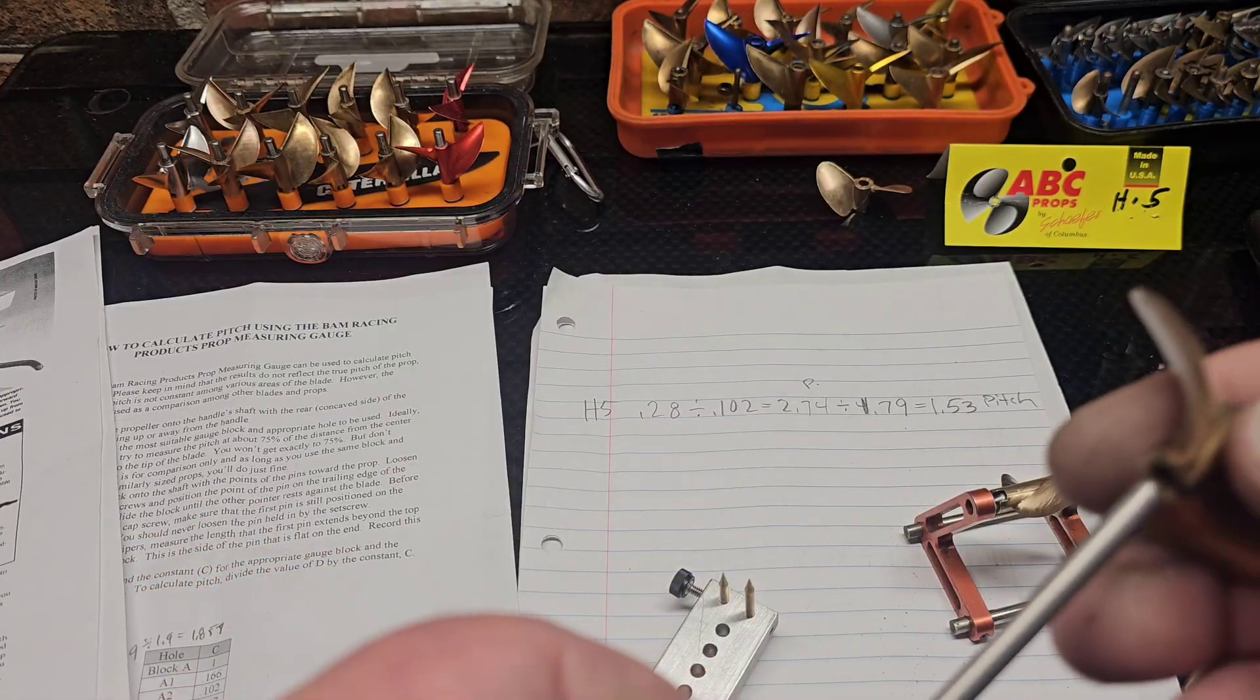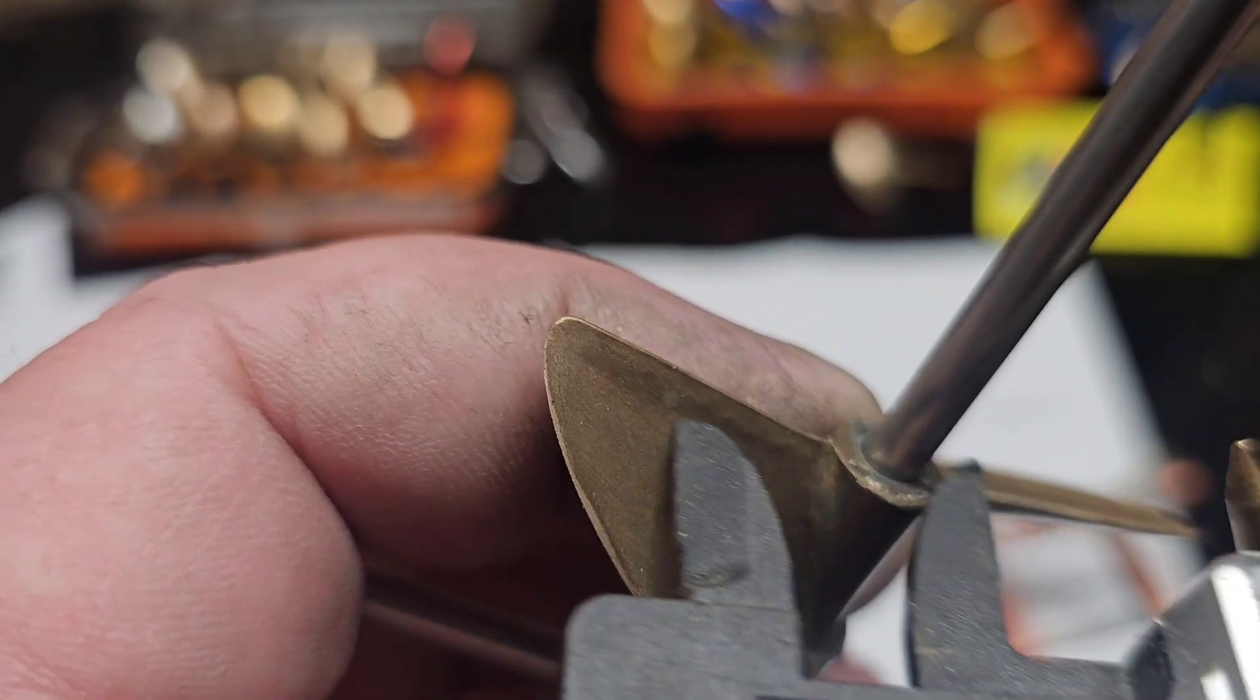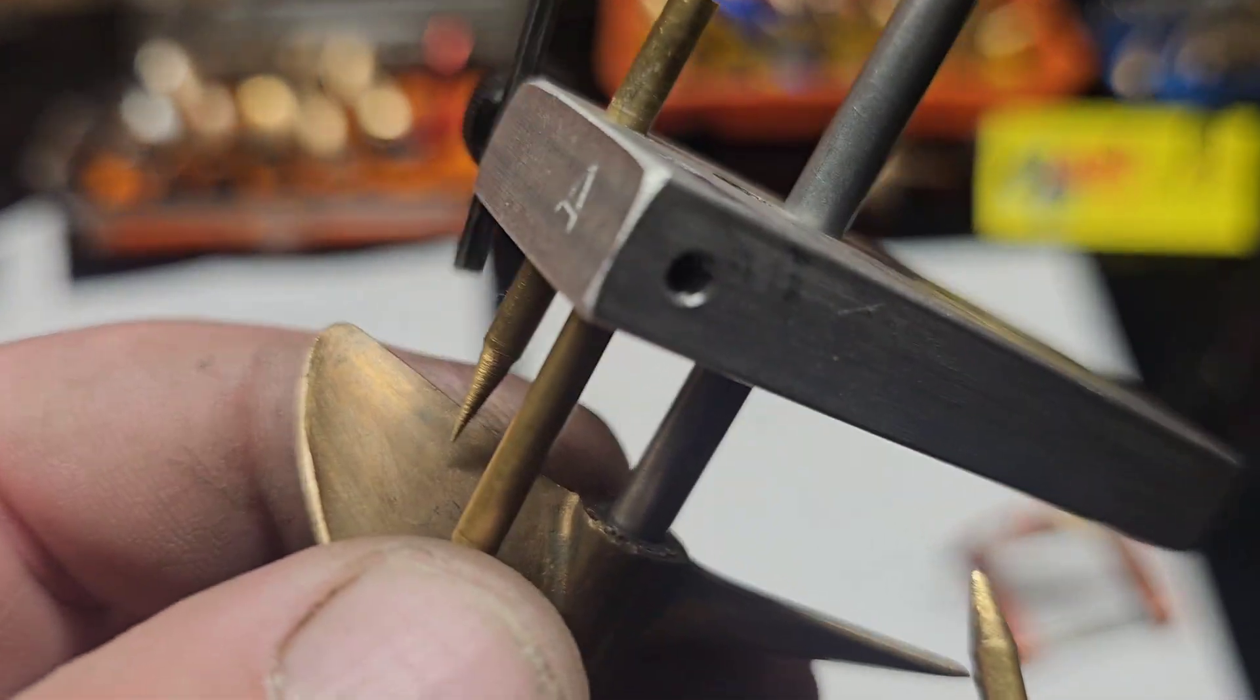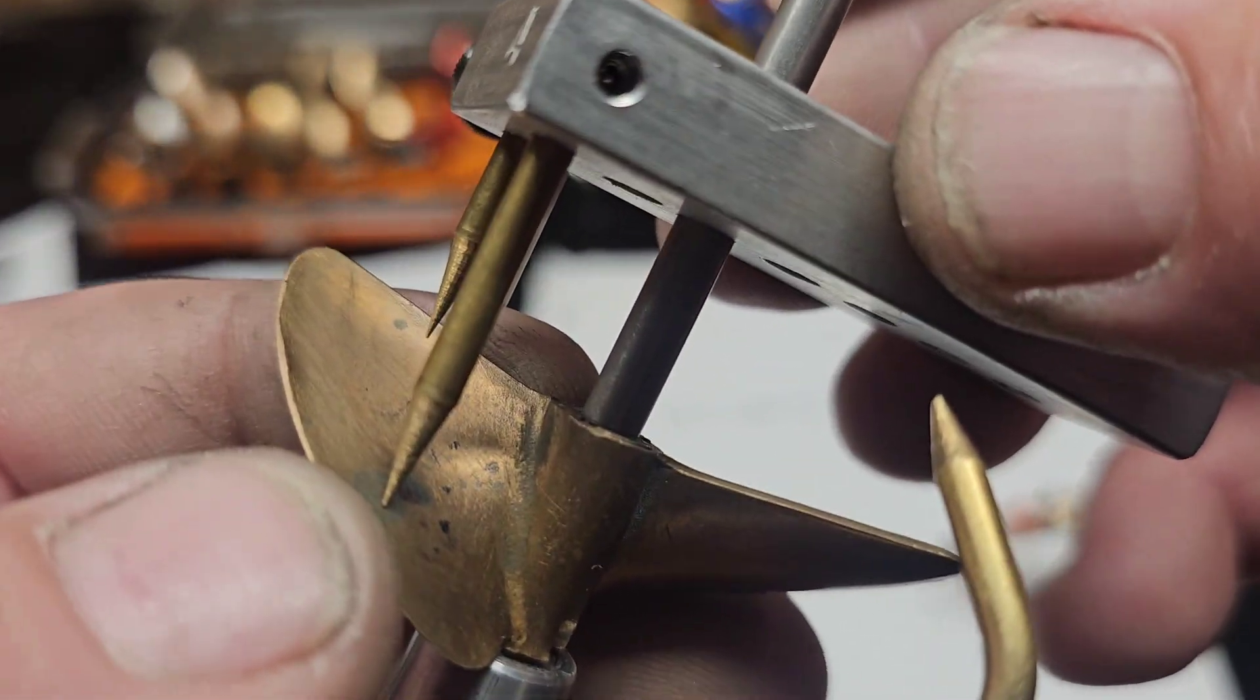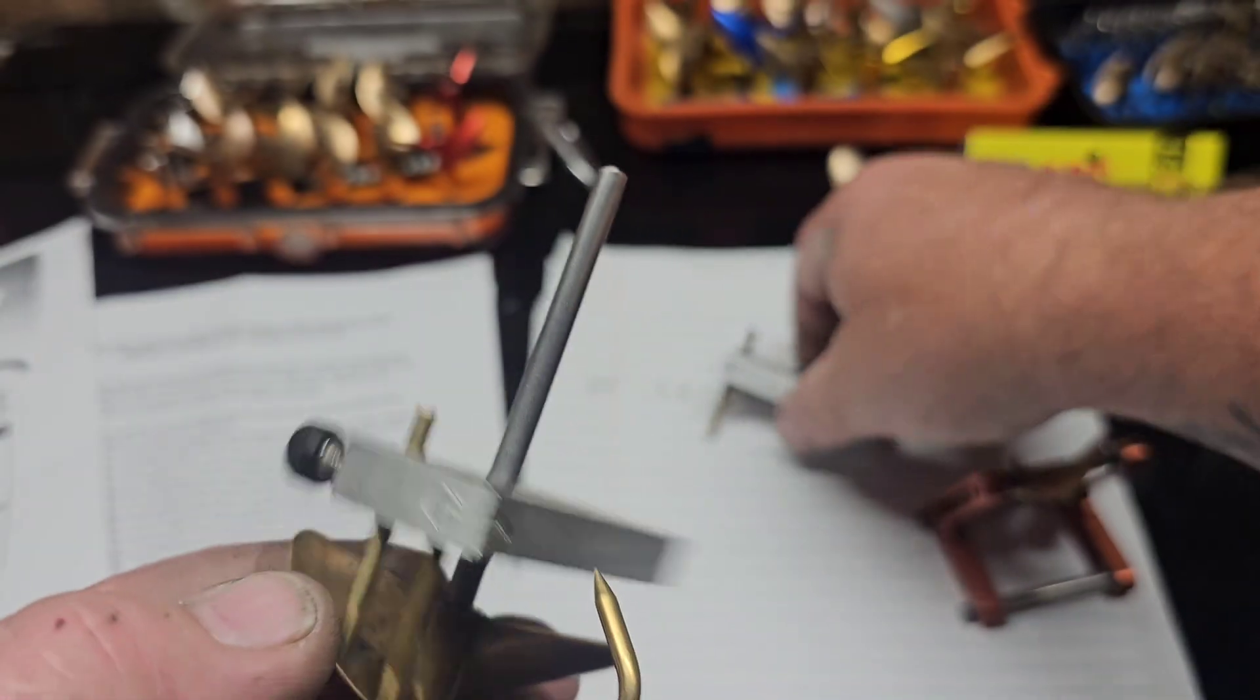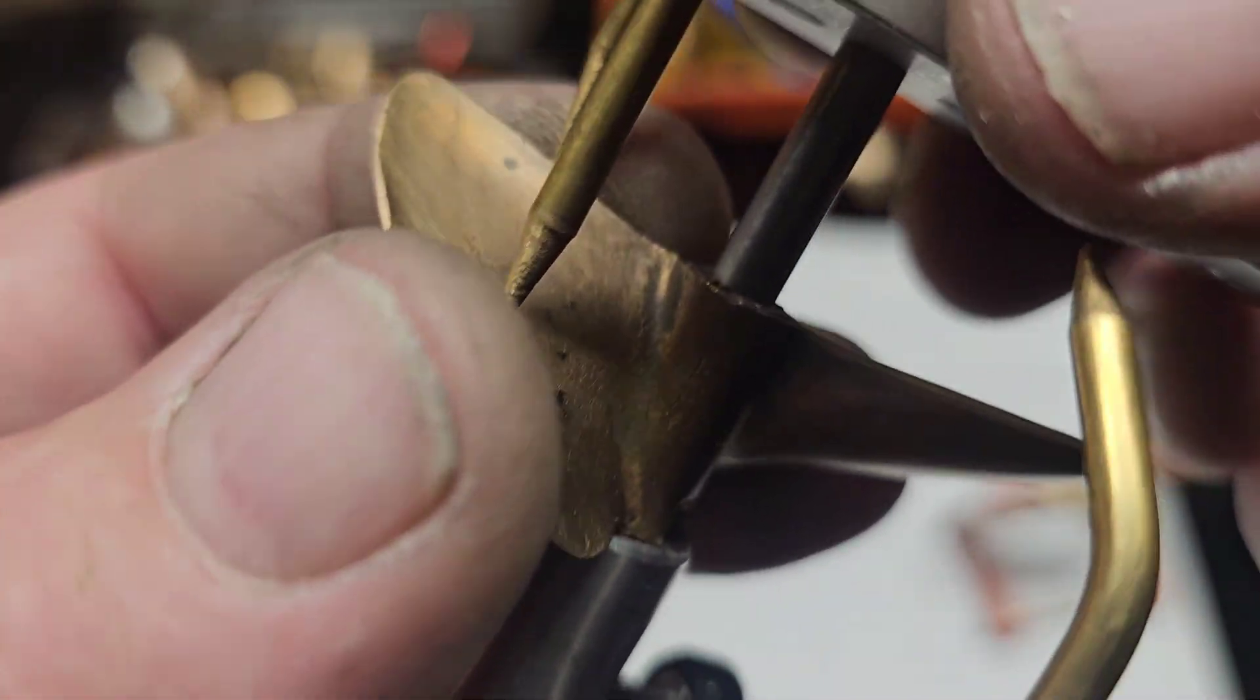So I might as well include this because I'm measuring it and whatever. So this is an Octura X455 that I've detongued and I've kind of worked on the trailing edge lip here a little bit. So I actually was going to use the A block for this prop, but the instruction said to measure the prop in that 75% area. So this looks close to 75, but we're going to use the G block just to see what result we get here.